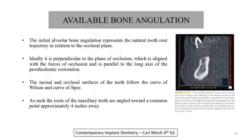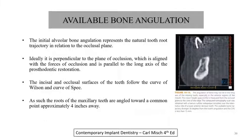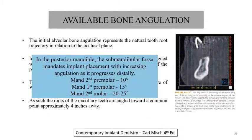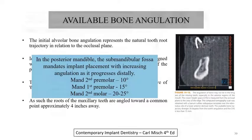For bone angulation, the initial alveolar bone angulation represents the natural tooth root trajectory in relation to the occlusal plane. Ideally, it is perpendicular to the plane of occlusion, aligned with the forces of occlusion, and parallel to the long axis of the prosthetic restoration. In the posterior mandible, the submandibular fossa mandates implant placement with increasing angulation as it progresses distally: for the mandibular second premolar it is 10 degrees, for the mandibular first molar it is 15 degrees, and for the second molar it is 20 to 25 degrees.